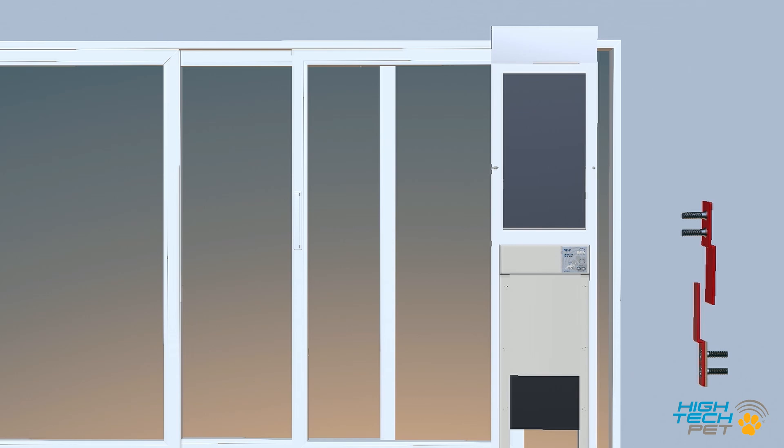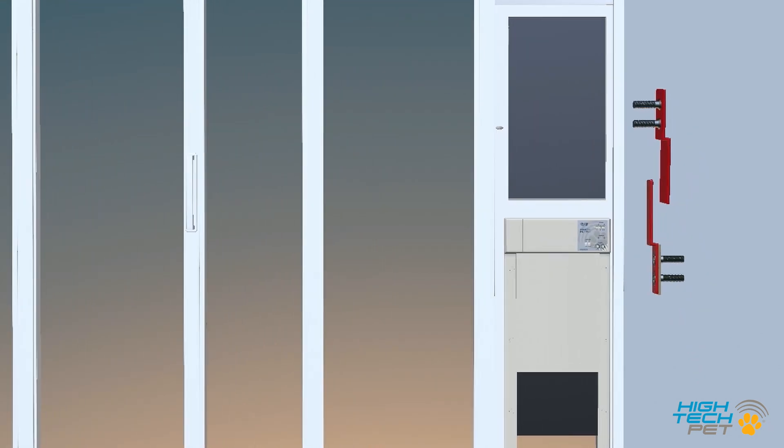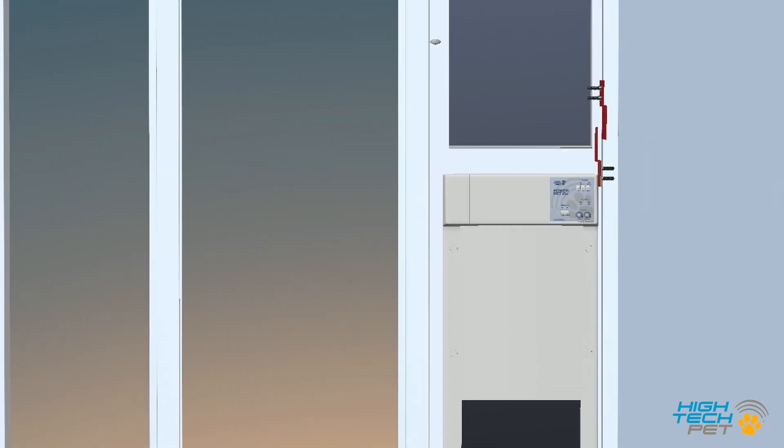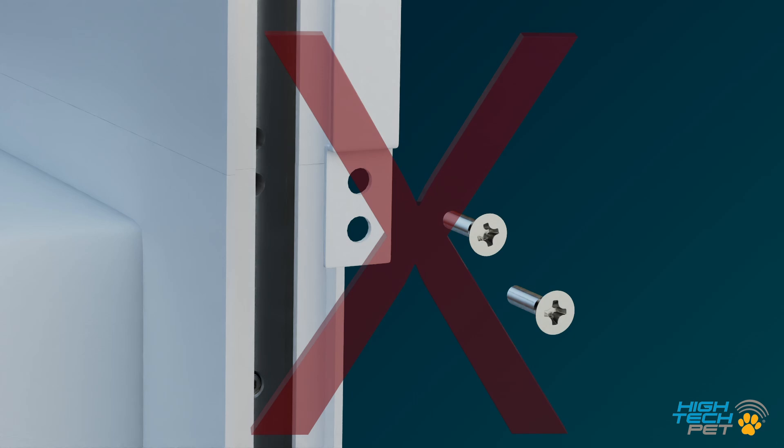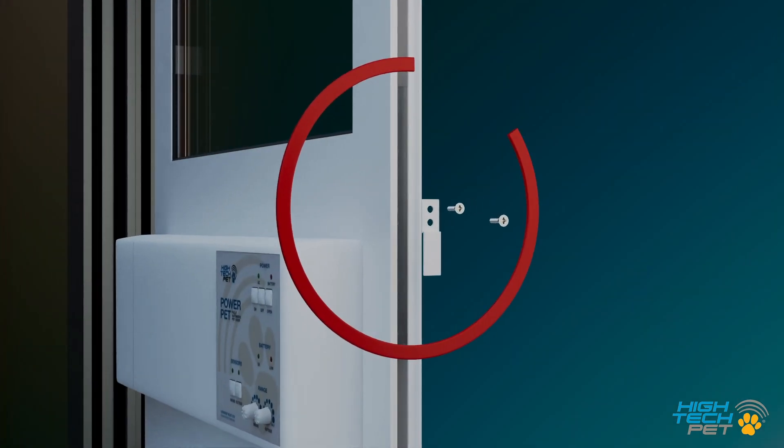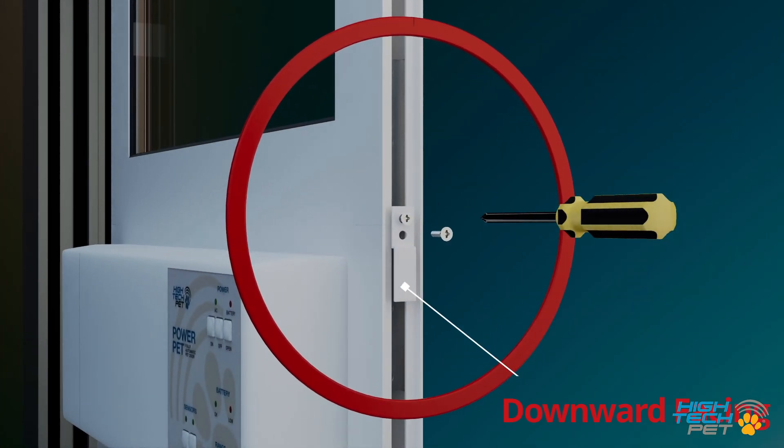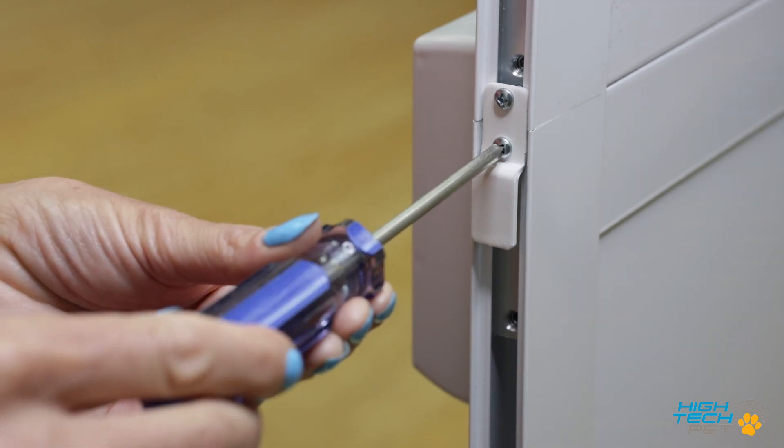Now we will install the interlocking door tabs to secure the patio pet panel to the existing patio door frame. Place the insert panel lock tab facing downward so that the screw holes are at the top. Secure the tab to the pre-drilled holes using the machine screws.